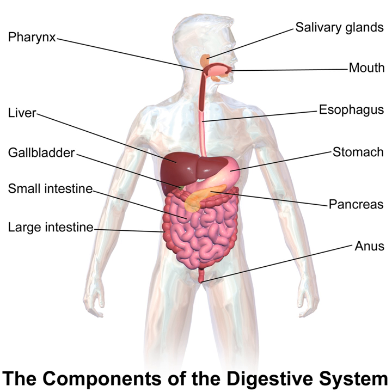The gastrovascular cavity functions as a stomach in both digestion and the distribution of nutrients to all parts of the body. Extracellular digestion takes place within this central cavity, which is lined with the gastrodermis, the internal layer of epithelium. This cavity has only one opening to the outside that functions as both a mouth and an anus; waste and undigested matter is excreted through the mouth/anus, which can be described as an incomplete gut.